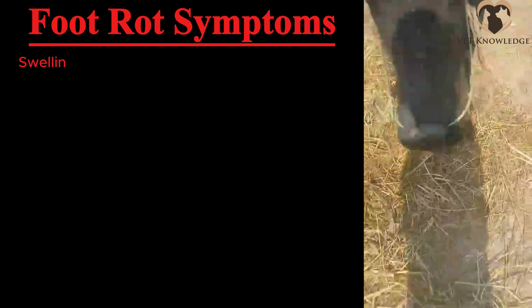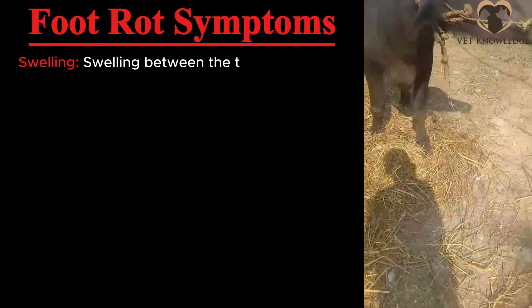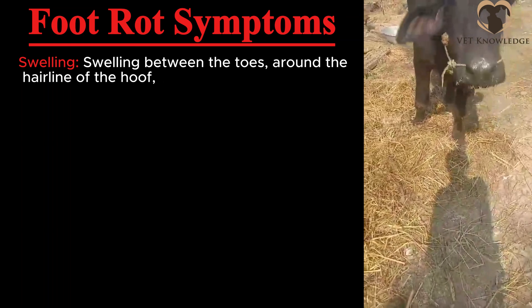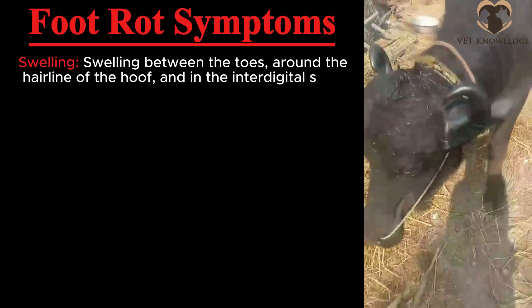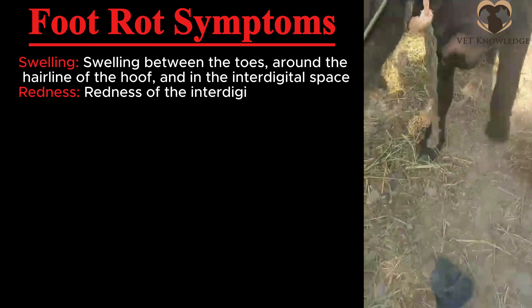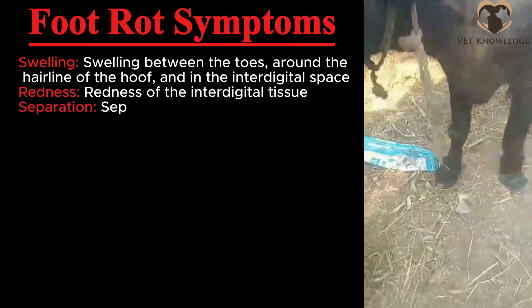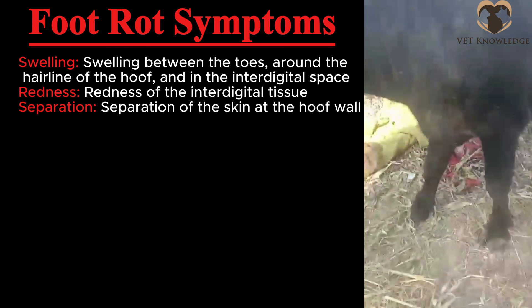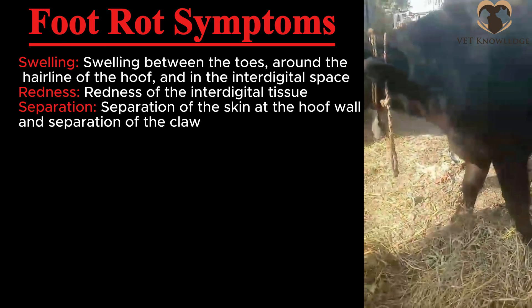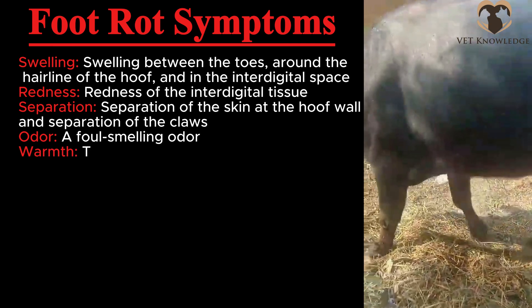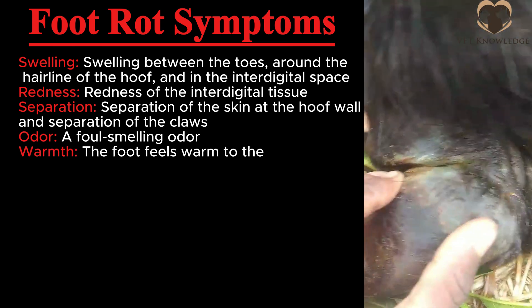Foot rot symptoms in detail: swelling between the toes, around the hairline of the hoof, and in the interdigital space. Redness of the interdigital tissue. Separation of the skin at the hoof wall and separation of the claws. A foul-smelling odor. The foot feels warm to the touch.